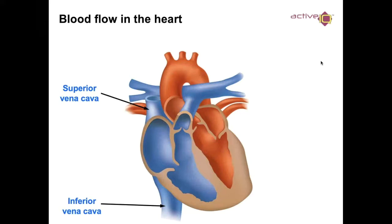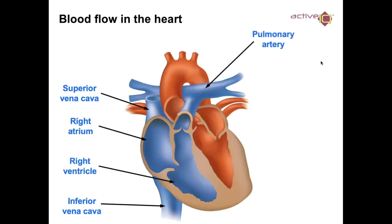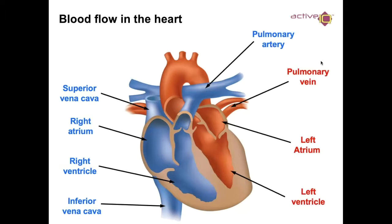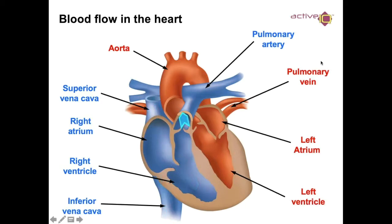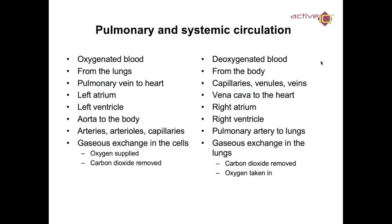We have the right atrium, right ventricle, the pulmonary artery, pulmonary vein, left atrium, left ventricle, and the aorta at the top. Deoxygenated blood flows in via the superior and inferior vena cava, goes from the right atrium to the right ventricle, and out via the pulmonary artery. Oxygenated blood then comes through the pulmonary vein to the left atrium, down to the left ventricle, and out through the aorta.